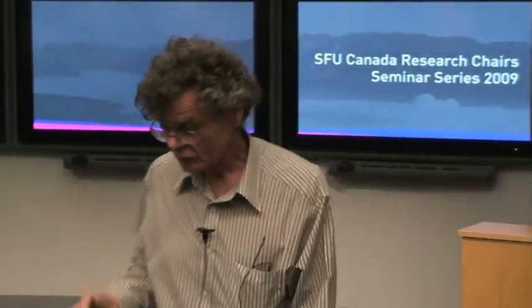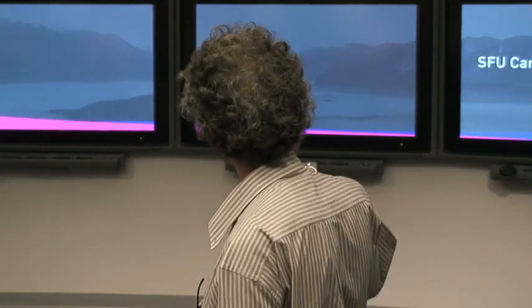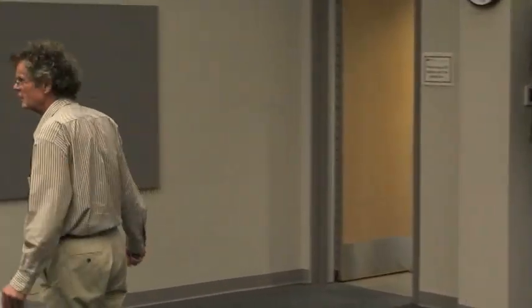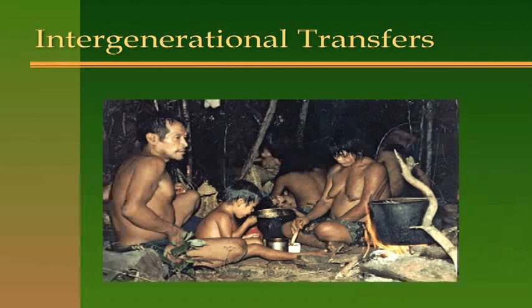The most economic aspect of the model concerns intergenerational transfers, which are huge for human beings — huge in hunter-gatherer societies and huge for us. Here's a picture of intergenerational transfer among the Ache, where parents are clearly looking after the child.